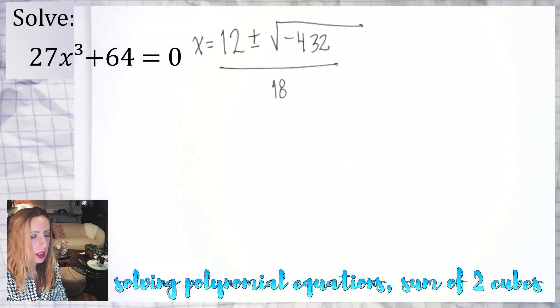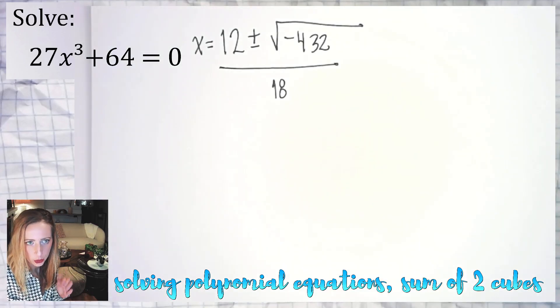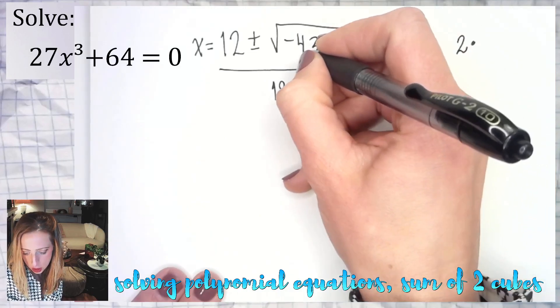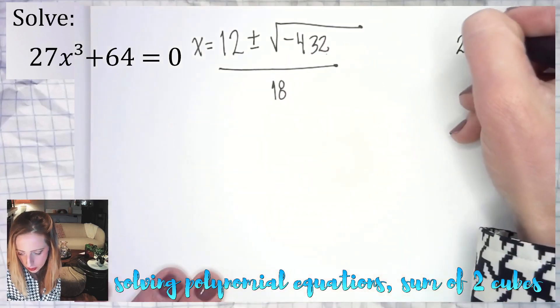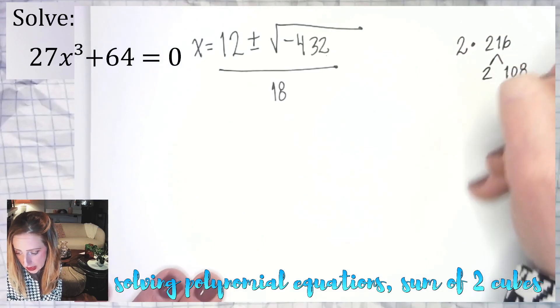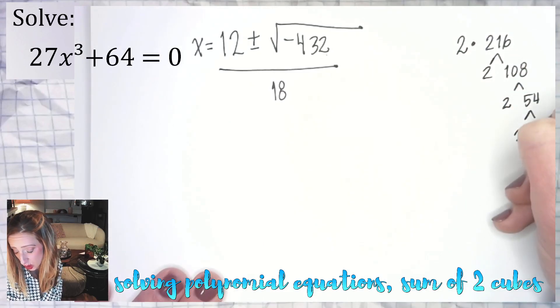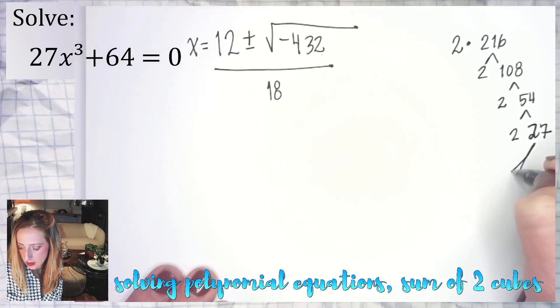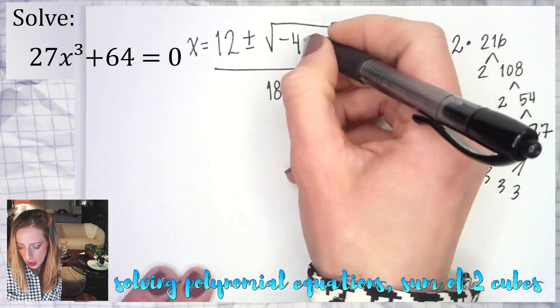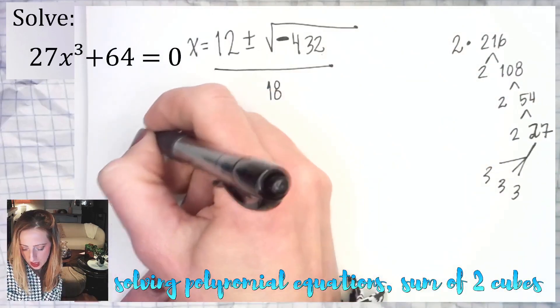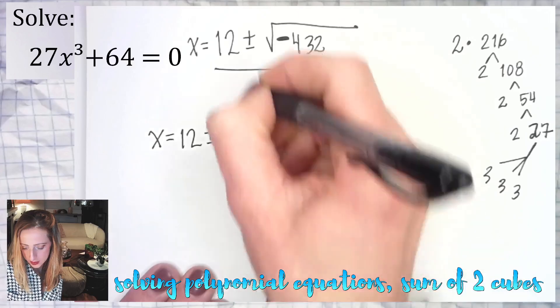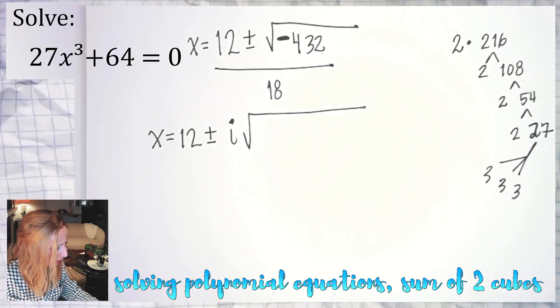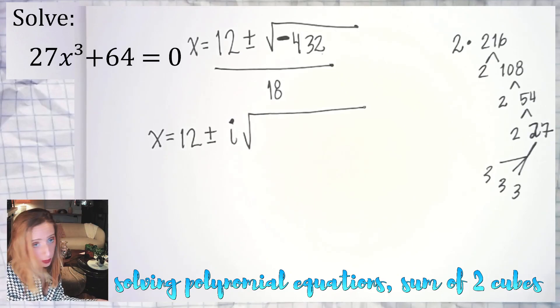432 over 18. You're going to have a calculator a lot of the time and you can use that to help you, but let's fully break this down as if we did not have the ability to do that. 432 is 2 times 216. Half of 400, half of 32. 216 is 2 and 108. 108 is 2 and 54. 54 is 2 and 27. Am I on the screen? Yes, okay. 27 is 3 times 3 times 3. All right, what is the prime factorization? And the negative we handle. So let's do a couple things. x equals 12 plus minus, I'm going to take the i out. That's from the negative. If you don't know what I'm talking about, I get into more detail in a different example.